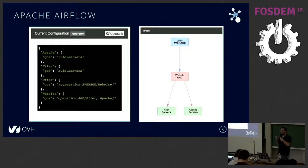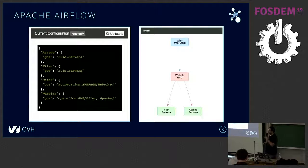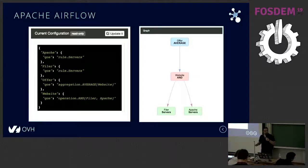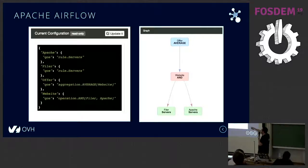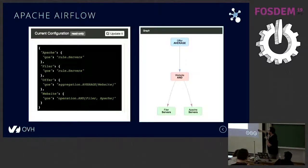How does Airflow know which task to launch — whether it should launch rule QoS, operation QoS, or aggregation? It's the user who tells Depsy how to do it using a simple JSON configuration. Through the web UI or the API, the user specifies: use rule QoS for Apache and Filer, aggregation for the offer, and operation for the website using the Filer and Apache nodes.